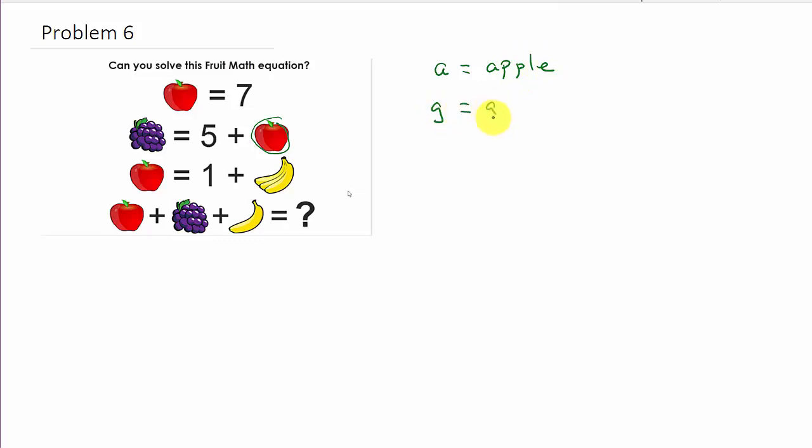G, we'll let that represent the grape, and we'll let B represent the banana.